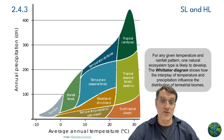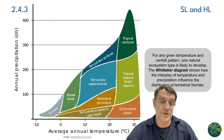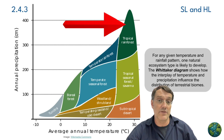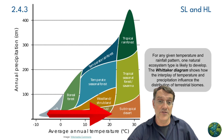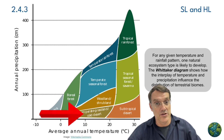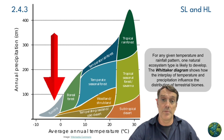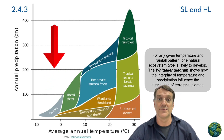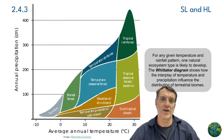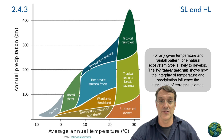This graph demonstrates how temperature and precipitation interact to create distinct biome types. Notice how tropical rainforests occur where both temperature and rainfall are high, but deserts develop in areas where temperature is high but precipitation is low. Tundra appears where temperatures are low, regardless of precipitation levels. This relationship helps us predict what kind of ecosystem will develop under specific climatic conditions.